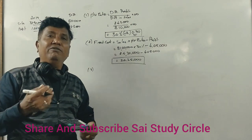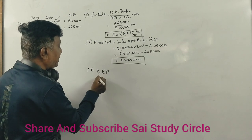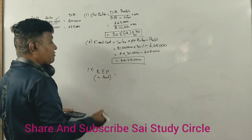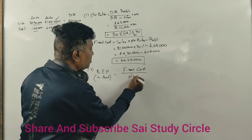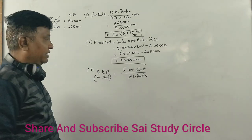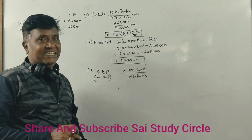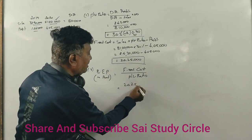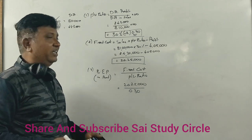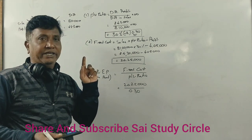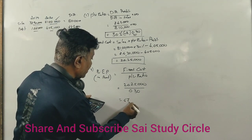For the Break-even Point in amount, the formula is Fixed Cost divided by PV Ratio. Fixed Cost is 20,25,000 and PV Ratio is 0.30. Dividing 20,25,000 by 0.30 gives a Break-even Point of 67,50,000 rupees.